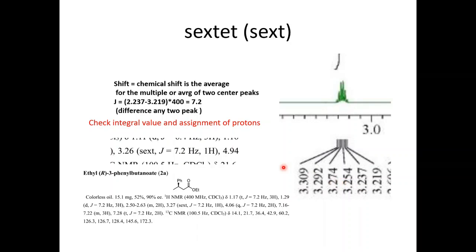This is a 400 megahertz spectra. That's why I multiply it by 400. Sometimes I have spectra which are 300 megahertz. Sometimes I also have spectra at 500 megahertz. Then according to that you can multiply this. You can take any difference but take care - sometimes it has experimental error, so match with other peaks.